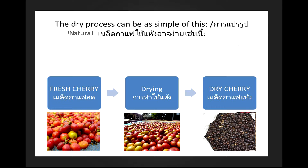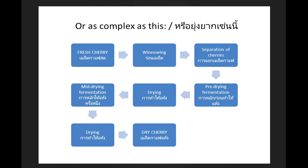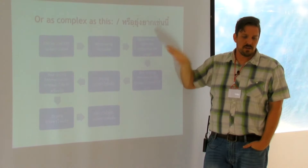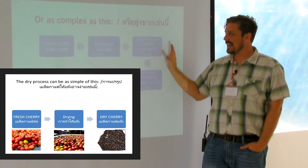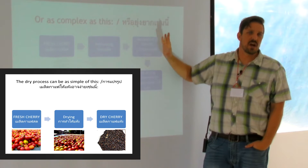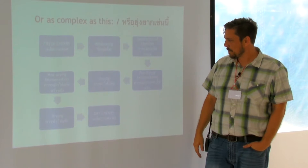The natural process can be as simple as: harvest fresh cherries, dry them, and then you have a dry cherry that you send to the dry mill. Or it can be a really complicated system — gathering fresh cherries, winnowing them, separating them depending on ripeness, mid-drying fermentation. In its simplest form, you take a cherry, dry it, and send it to the dry mill. But it can get really complicated — people are doing all sorts of fermentation or different types of drying to impact the flavors of naturals.